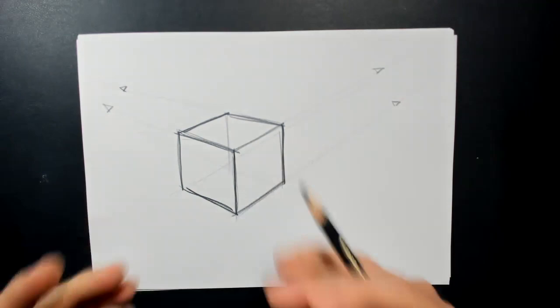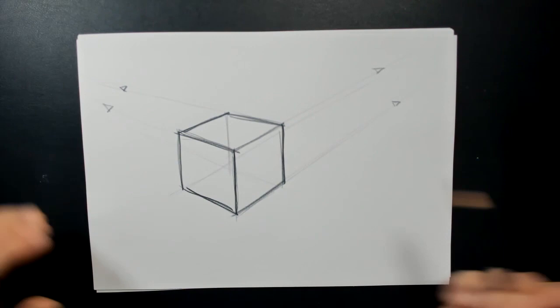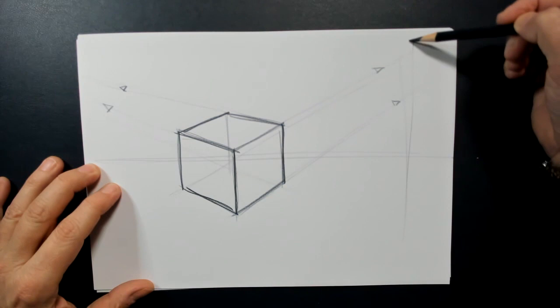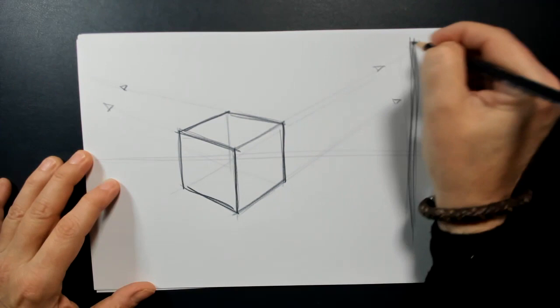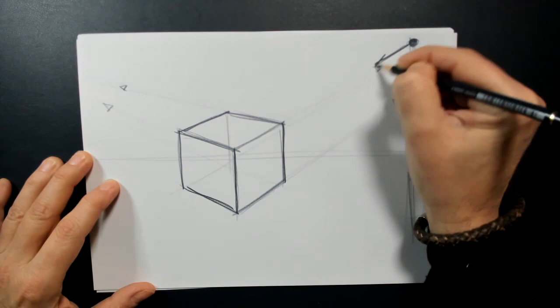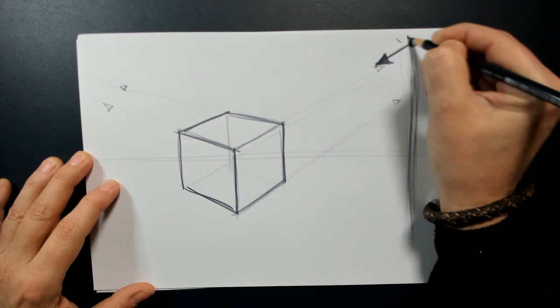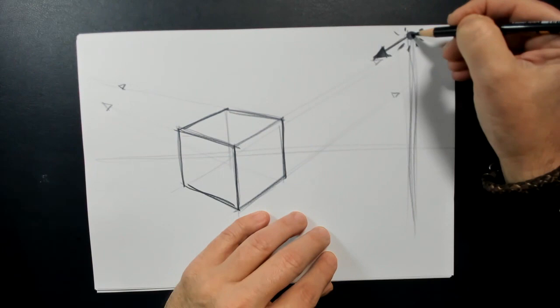So now how do I make the cast shadow of this cube? It's not that complicated. This is the horizon. I put a straight line here, a vertical line, and I say that the light is coming from here. This is the light source.